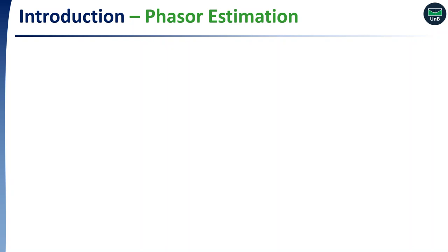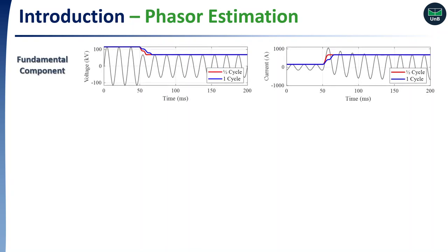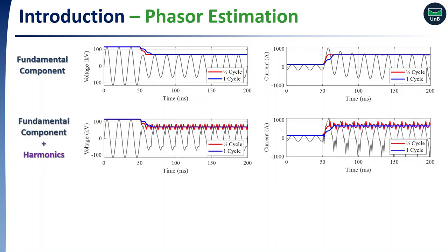For example, consider a fault that takes place in an AC system. Here we can see the AC voltage and current signals and the magnitude of the fundamental phasor estimated using full-cycle and half-cycle DFT-based algorithms. If we consider harmonic components also arise just after fault inception, we can see that phasor estimation using the half-cycle algorithm suffers from inaccuracy. On the other hand, there is no error caused by harmonic components when using full-cycle algorithms.